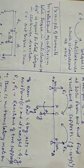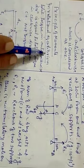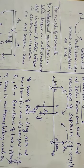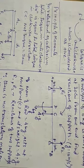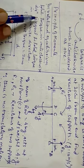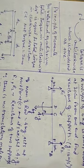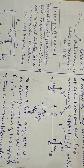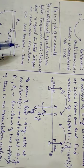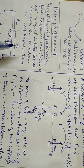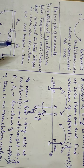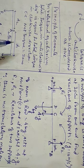Principle of moments — in rotational equilibrium, the net torque is zero. This means the total torque in the anti-clockwise direction is equal to the total torque in the clockwise direction. Some torques may be anti-clockwise and some clockwise, but the clockwise sum equals the anti-clockwise sum.